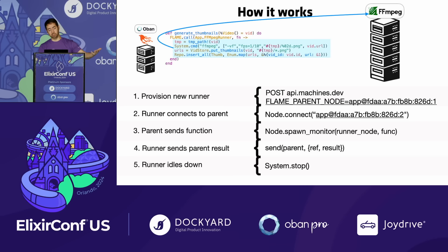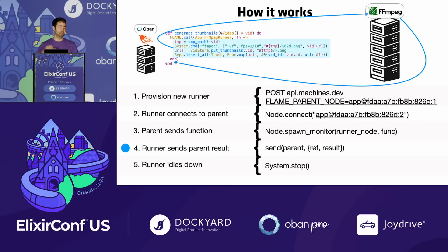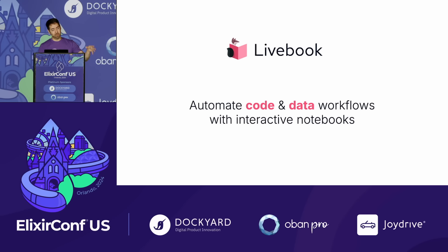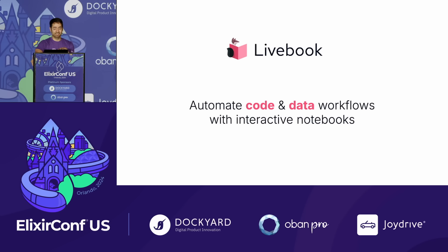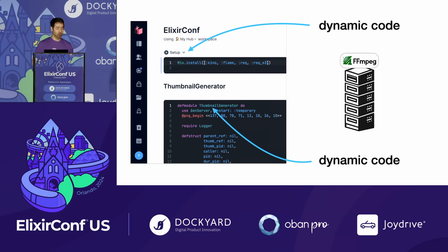The result is sent back to the caller — the caller blocks, but since Elixir is a concurrent language that's no problem. They get the result of the repo insert, then the runner can idle down, await new work, or be treated like a lambda — pay for only what you use, idle down if there's no work, and call system stop. This takes us to Livebook, where we want this elastic scale but the problem is the code is highly dynamic.